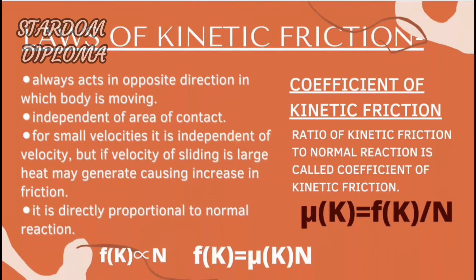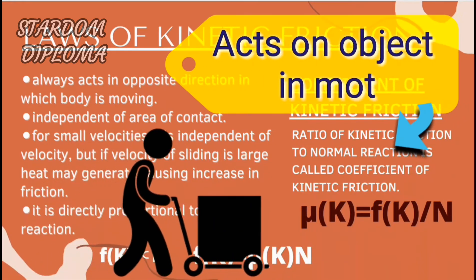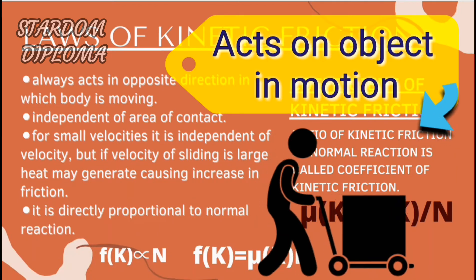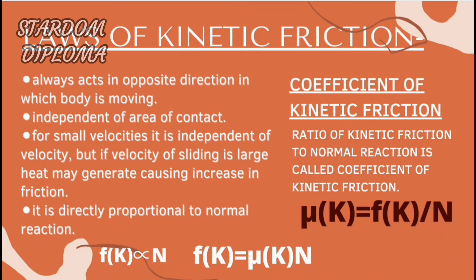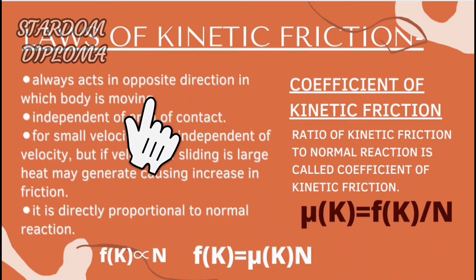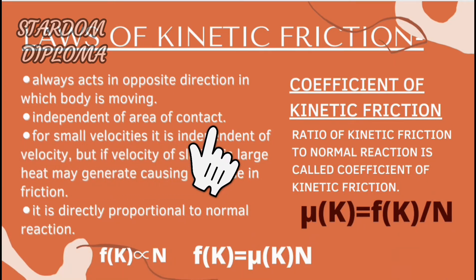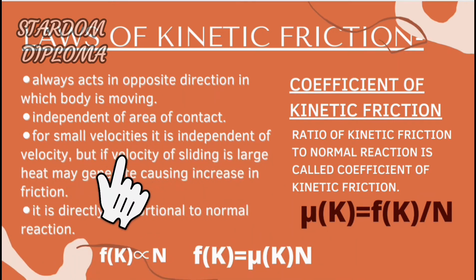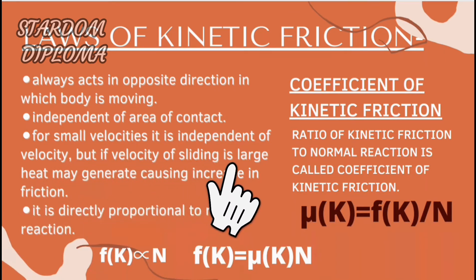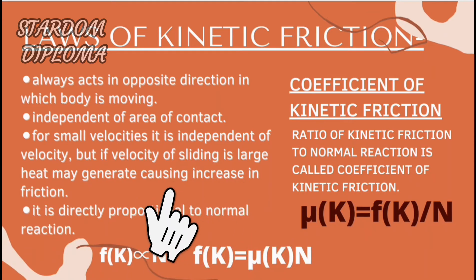Moving forward, we have the laws of kinetic friction. Kinetic friction is a type of friction which acts on a body that is sliding over another surface. The first law is the common one — it always acts in the opposite direction to which the body is moving. The second law is that it is independent of the area of contact. The third law is that for small velocities, it is independent of velocity. But if the velocity of sliding is large, heat may be generated, causing an increase in friction.